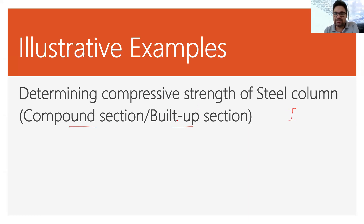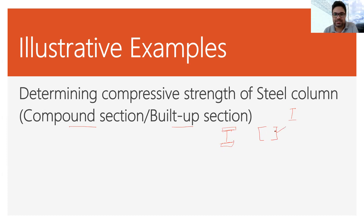Built-up sections or compound sections are those sections which are composed of two or more sections. For example, there may be an I-section along with plates — if it is connected with plates, it becomes a compound section. Similarly, instead of an I-section, there may be two channel sections composed to form a single unit, which would also be called a compound or built-up section.